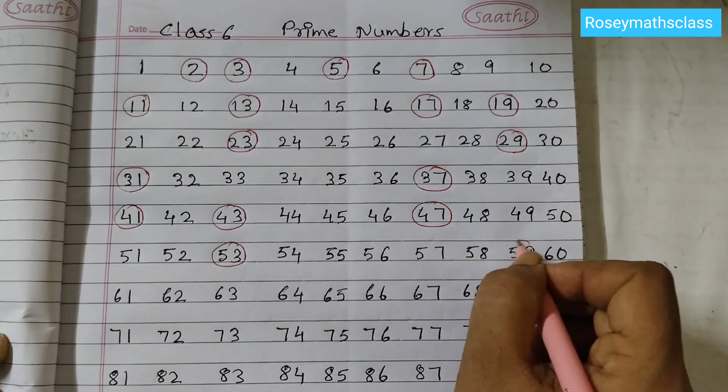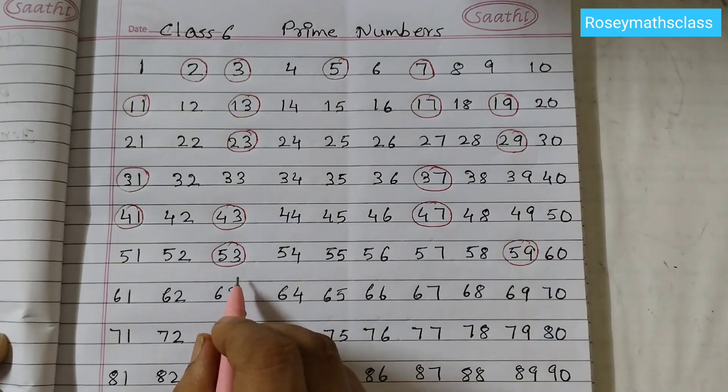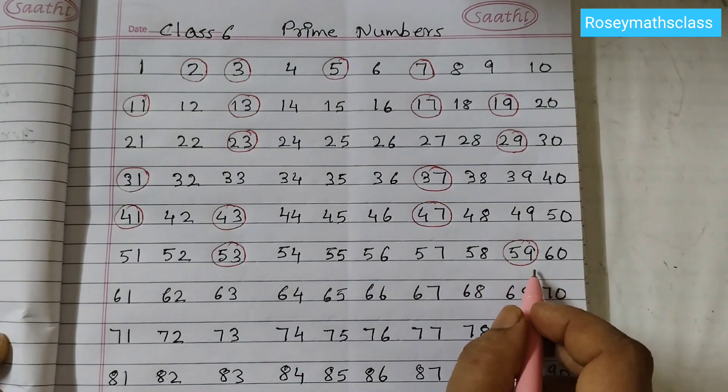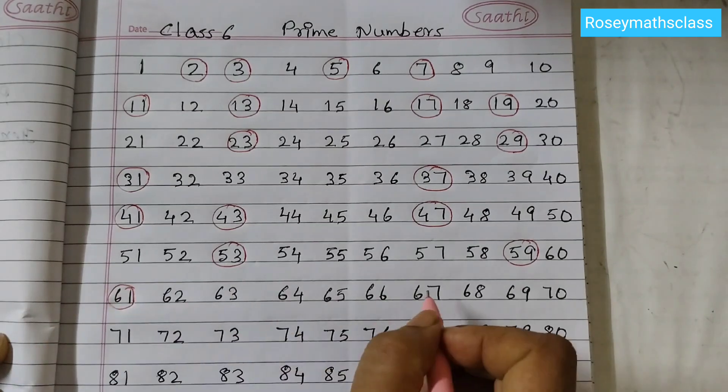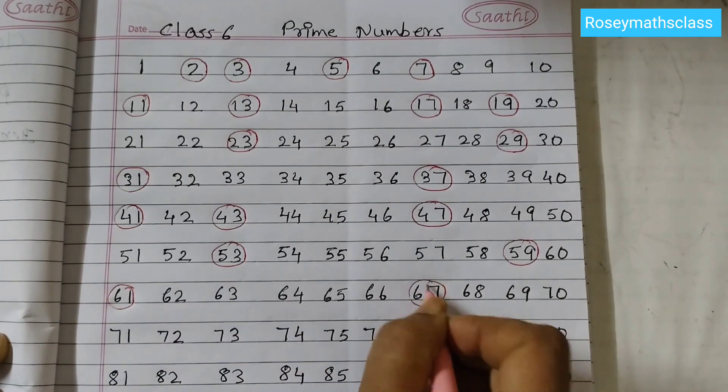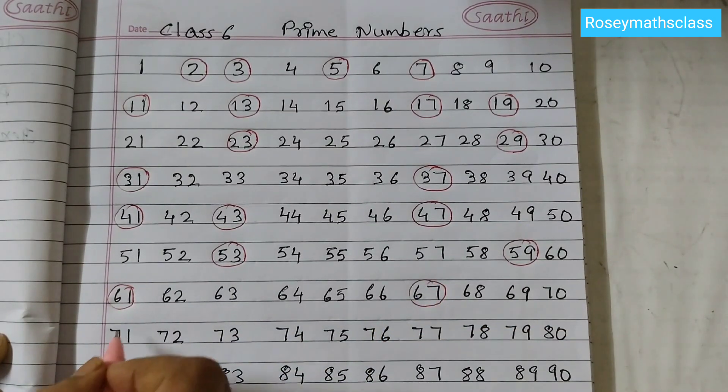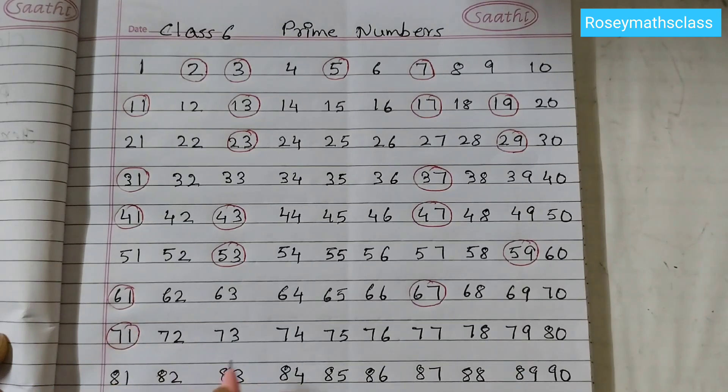59. There are two numbers, 53 and 59. Next we have 61, 67, 71, 73.